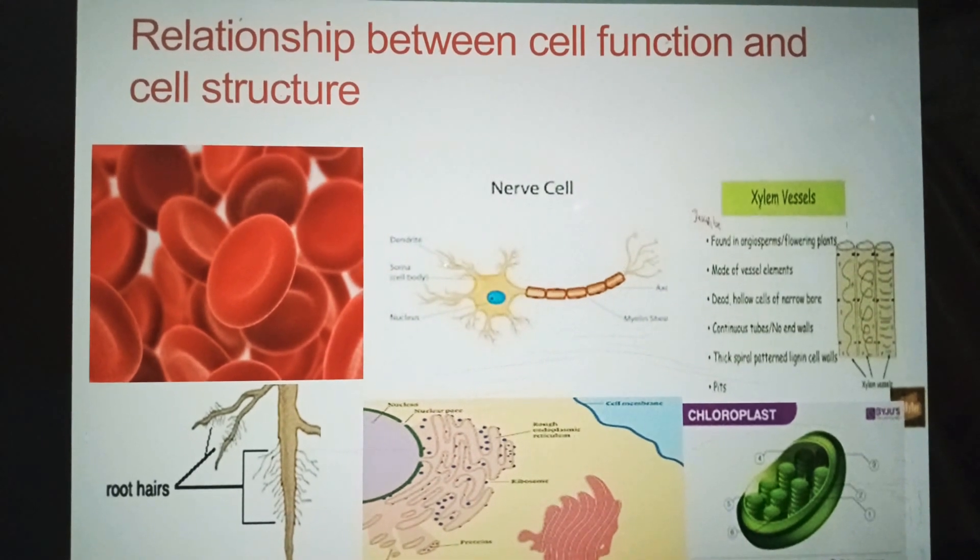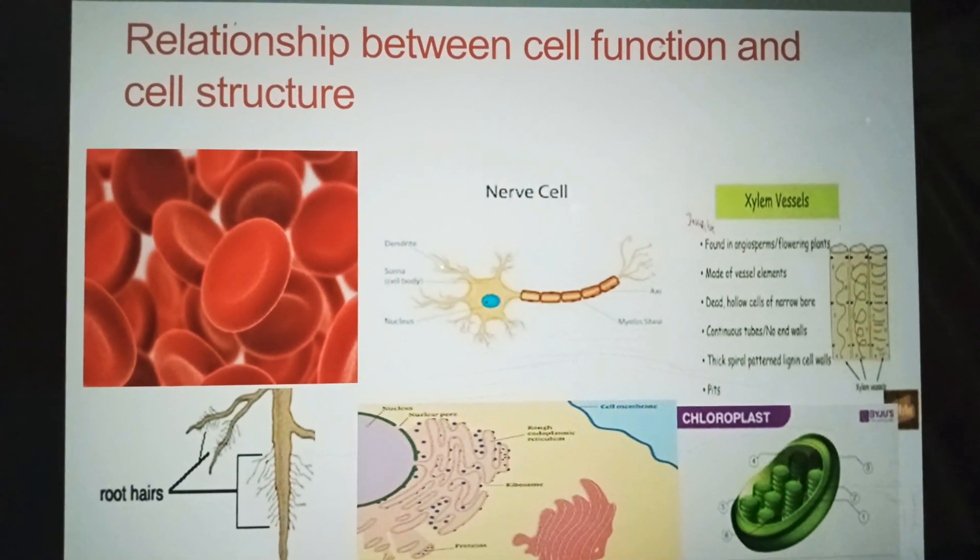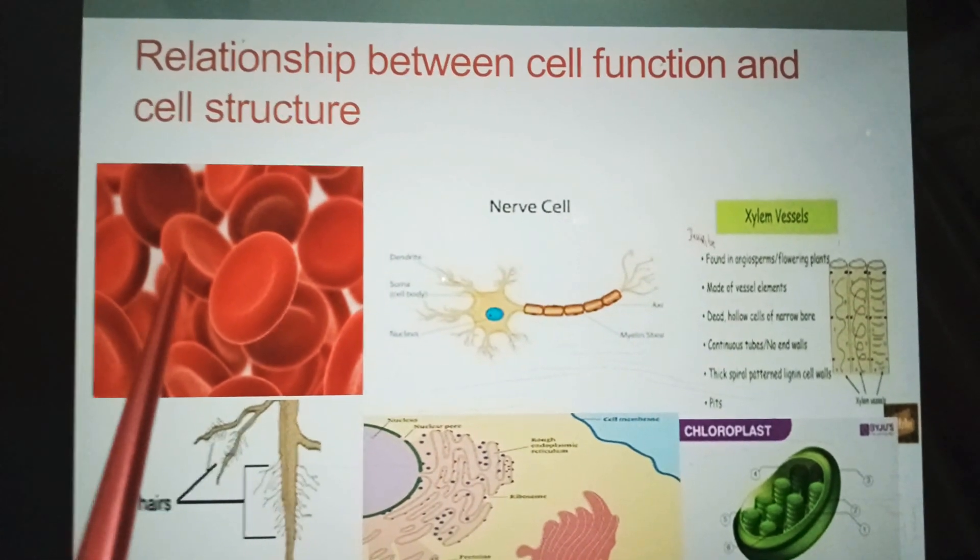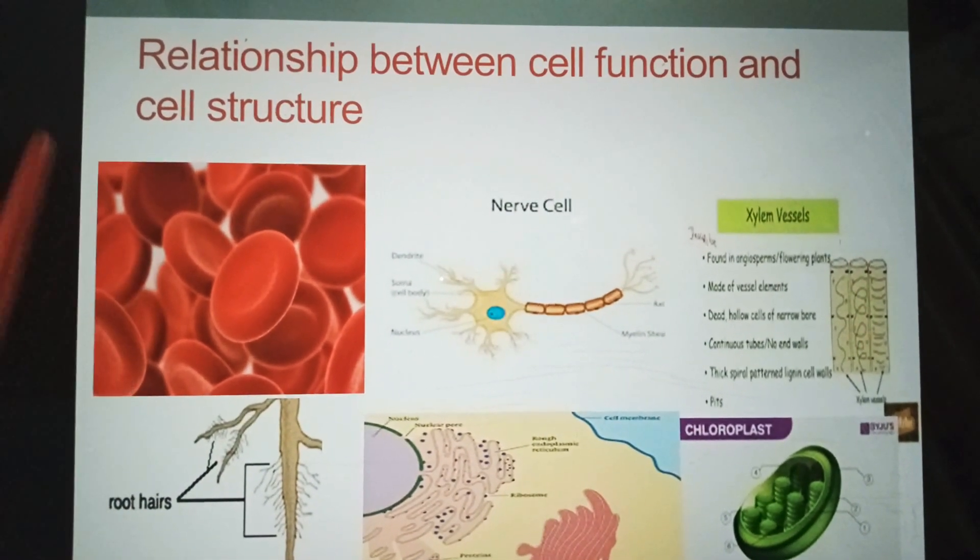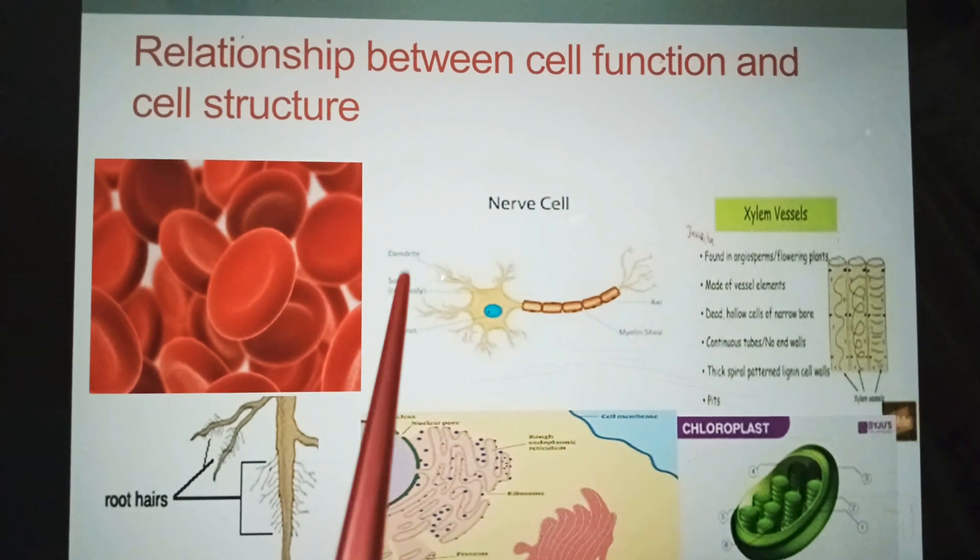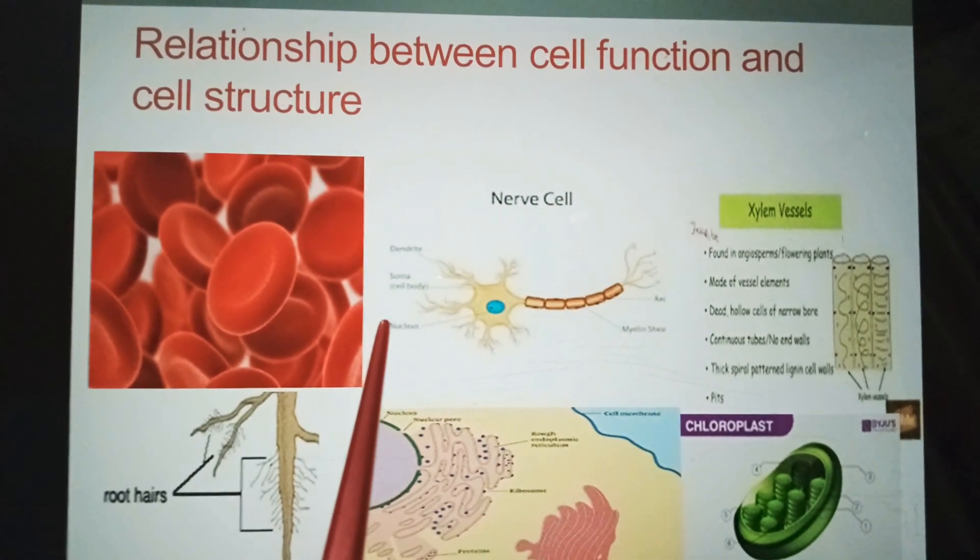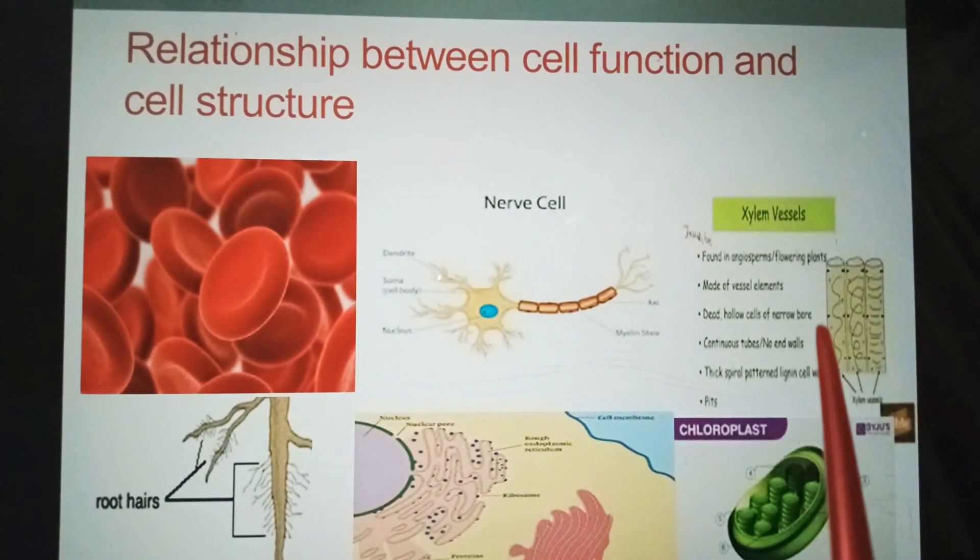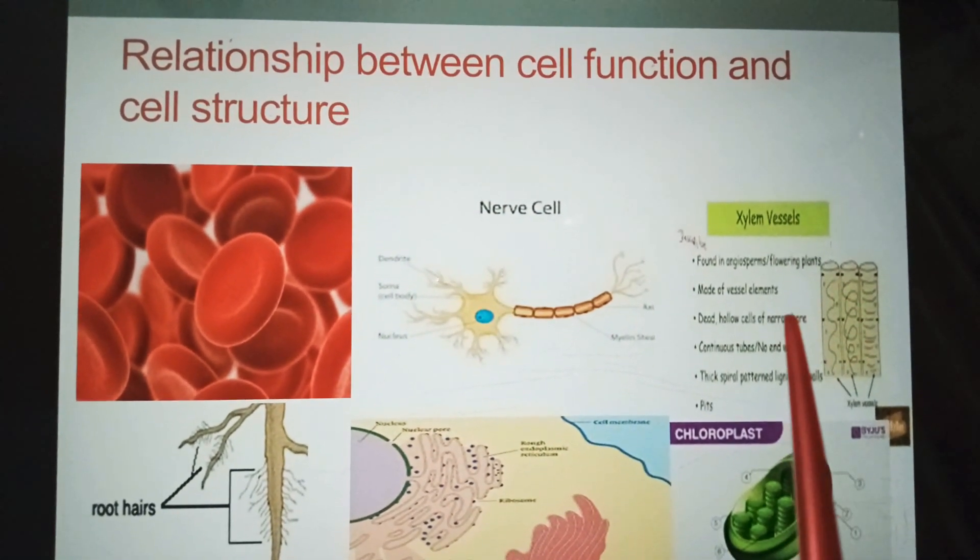Cells of one type may differ from those of other types in the following respects: size and shape. Red blood cells are round to accommodate globular hemoglobin. Nerve cells are long for the transmission of nerve impulses. Xylem cells are tube-like and have thick walls for the conduction of water and support.